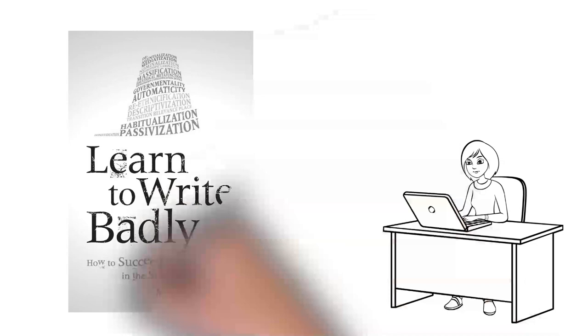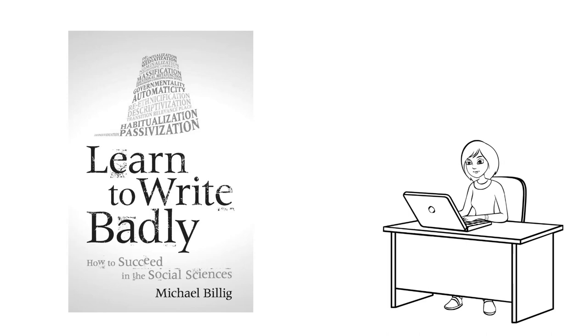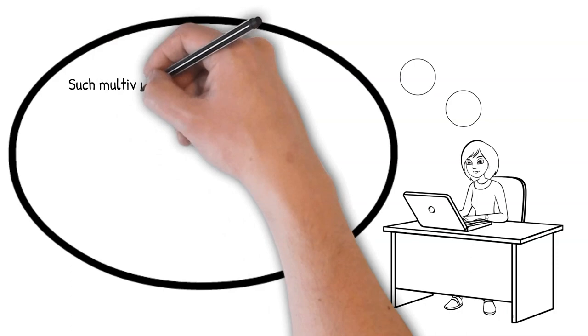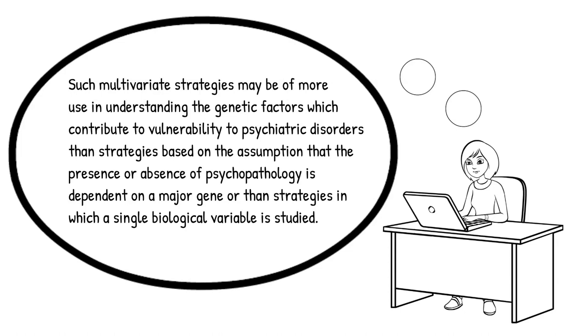Well, let me give you an example, which I am taking from an excellent book by Michael Billig, called Learn to Write Badly, How to Succeed in the Social Sciences. Take a look at the sentence, which comes from a psychology study of mental disorder. Here's what the authors wrote. Such multivariate strategies may be of more use in understanding the genetic factors which contribute to vulnerability to psychiatric disorders than strategies based on the assumption that the presence or absence of psychopathology is dependent on a major gene, or then strategies in which a single biological variable is studied.